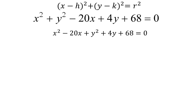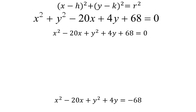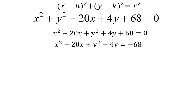The next step is to move any numbers that you have to the other side — keep all your variables on one side and move all your numbers. You might have multiple numbers; in this case we only have one. It's a positive 68, and in order to move it to the other side, I'm going to subtract 68.